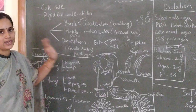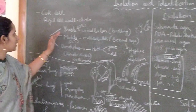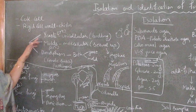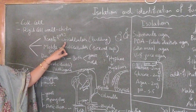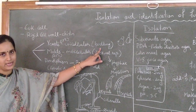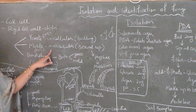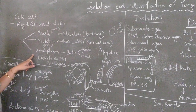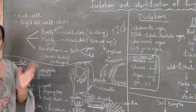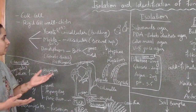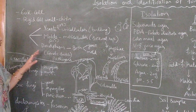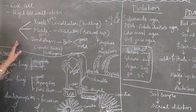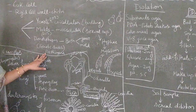The fungal cell wall is made up of chitin. We can divide fungi into three types: yeast, molds, and dimorphic fungi. Yeast are unicellular fungi which reproduce by budding, whereas molds are multicellular fungi which reproduce by sexual reproduction. Dimorphic fungi have both the characteristics of yeast as well as mold, mostly due to a genetic switch, and most dimorphic fungi belong to pathogens.